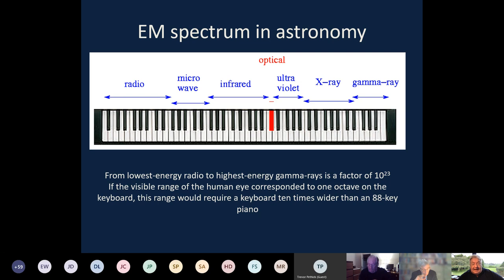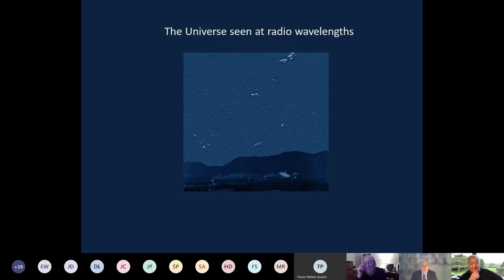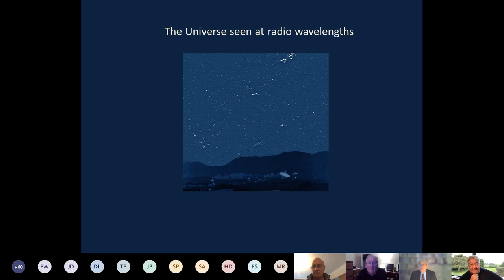I want to begin our journey at the radio end of the spectrum and look at the sky as we would see it if our eyes could see at radio wavelengths. This beautiful picture is a simulation based on data taken with telescopes from the National Radio Astronomy Observatory in the United States. Superficially it looks like the night sky as seen by the human eye at a dark site, but when we look with the naked eye almost everything we see is a star inside the Milky Way — all very nearby, metaphorically in our backyard.